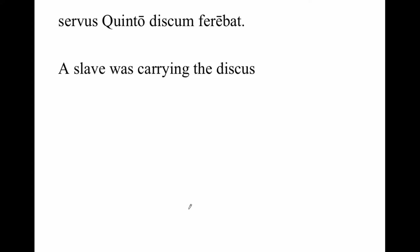Servus Quinto discum ferebat. A slave was carrying the discus. Here's a case where the idea is Caecilius and Quintus are on their way somewhere, there is a slave accompanying them. He's the one carrying the discus — he's carrying it for Quintus. Same word order that we had with the indirect object. That is the dative singular ending for second declension nouns or names. In the course of the story, we're going to see all of the dative singulars and plurals of first, second, and third declension.